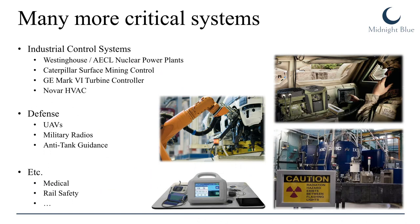QNX is used in many more critical systems — these are just two examples. You can find it in industrial control systems like the nuclear power plants of Westinghouse, surface mining control, turbine controllers, and various military systems such as UAVs, military radios, anti-tank guidance systems, medical systems, railway safety — you name it. So the security implications are obvious.